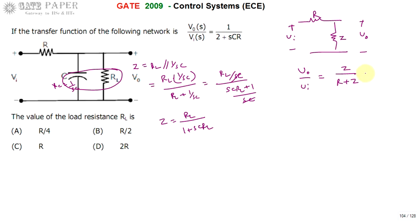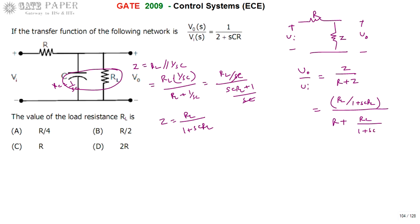Substituting Z = RL/(1 + sCRL), we get V0/VI = [RL/(1 + sCRL)] divided by [R + RL/(1 + sCRL)]. Taking (1 + sCRL) as a common factor from the denominator: